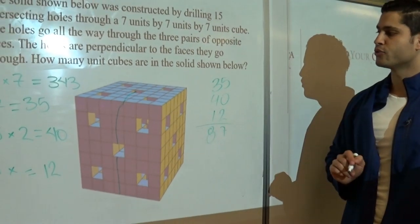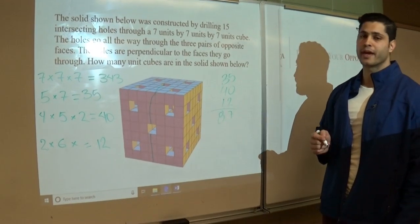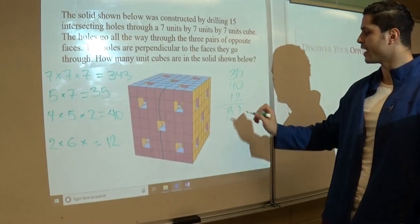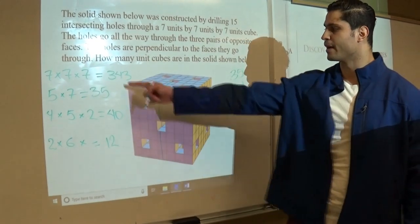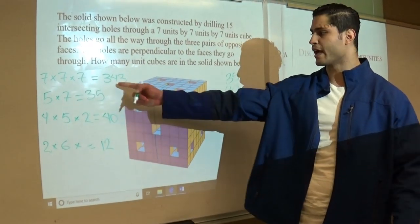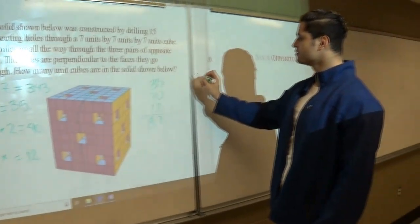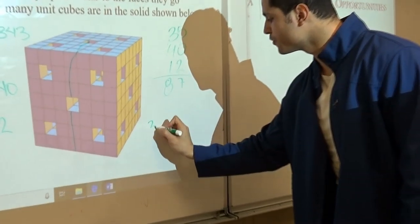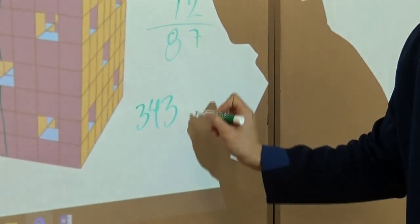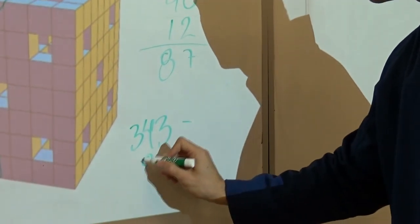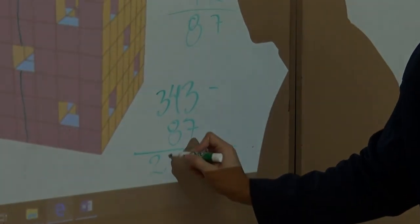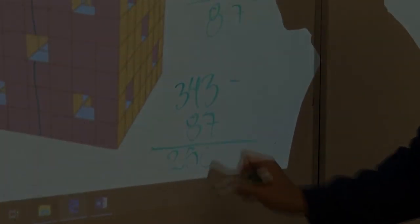How do we figure out how many unit cubes we have left? Simple. We just subtract 87 from the total unit cubes we had in the beginning, which is 343 minus 87. And we get a total of 256 unit cubes left.